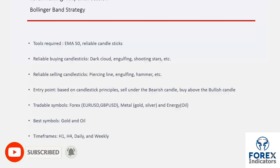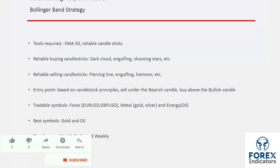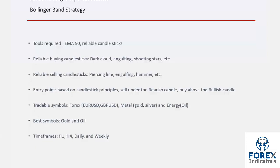Whenever the trend is over the middle line and a significant candlestick forms, an important signal will be generated. Some valid and strong candlesticks for a sell order are dark cloud, engulfing, and a shooting star. Some valid and strong candlesticks for a buy order are piercing line, engulfing, and hammer.